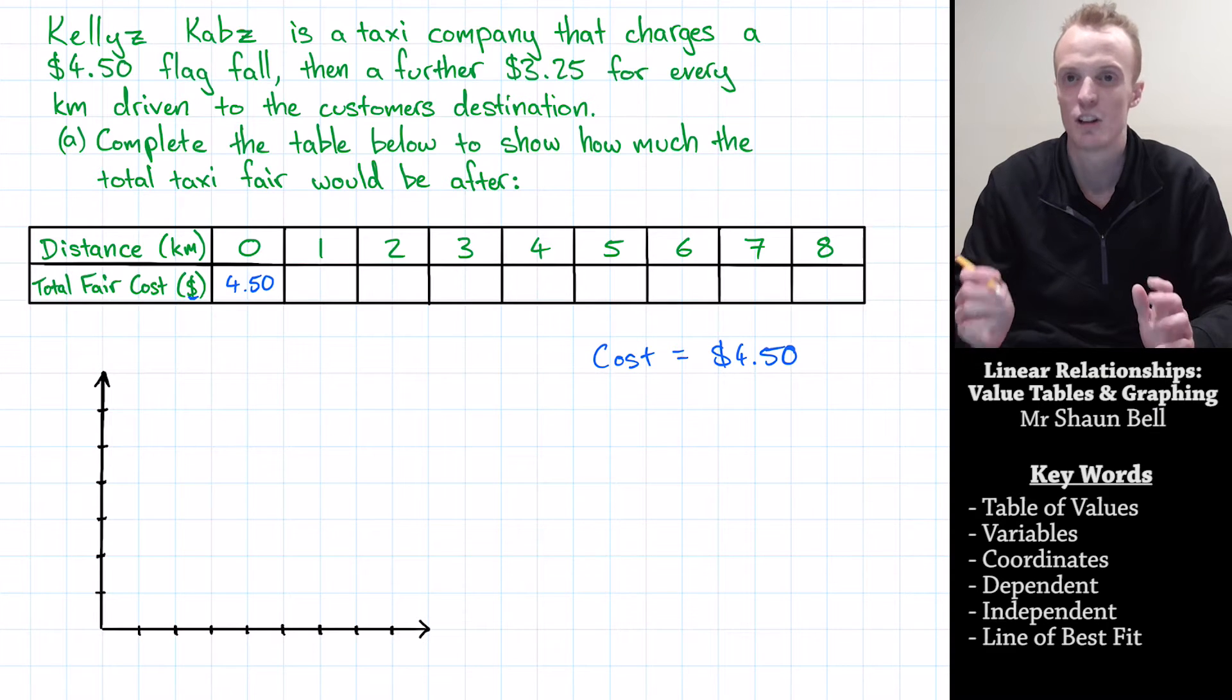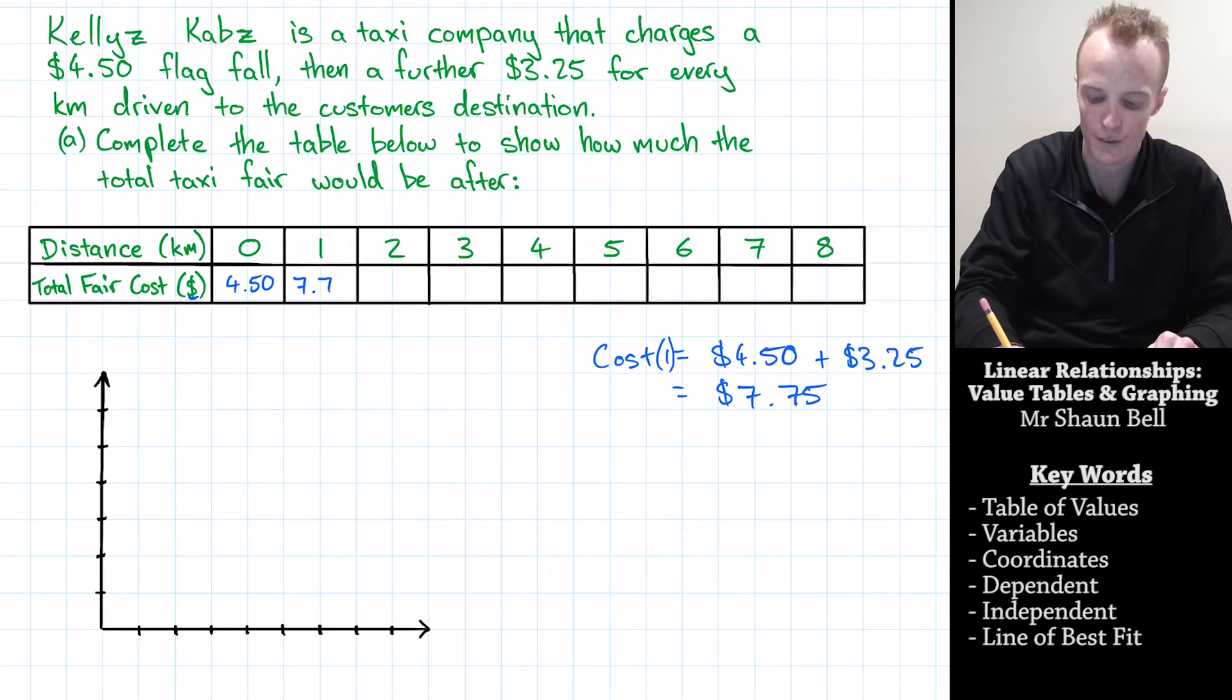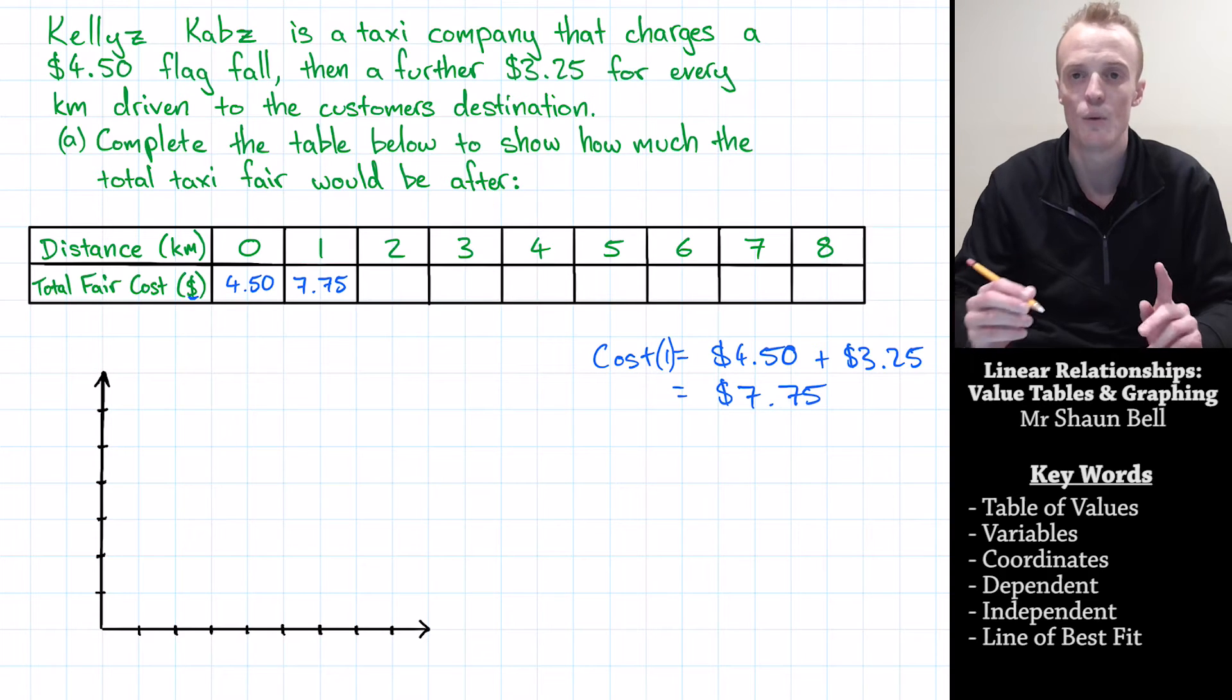So next, let's find out how much it costs for one kilometre. So for one kilometre, we need to pay that $4.50 flag fall for getting inside the cab. But then we need to pay an extra $3.25 for that one kilometre that we travel. So the cost for one kilometre is going to be equal to that $4.50 flag fall plus $3.25, which is equal to $7.75. And we enter that value of $7.75 under the one kilometre heading.